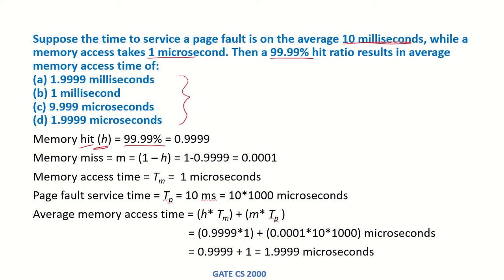The times when the address that the processor requested was not found in the memory means it was a memory miss, a page fault. If it is m, then it will be 1 minus the hit ratio, so 1 minus 0.9999, which is 0.0001.